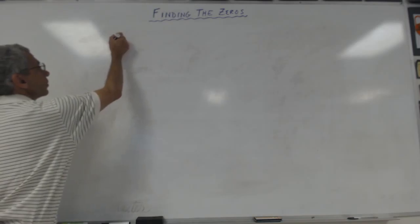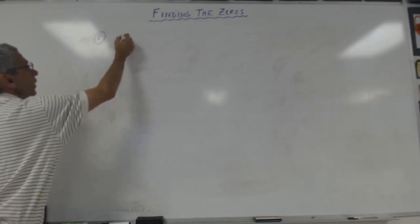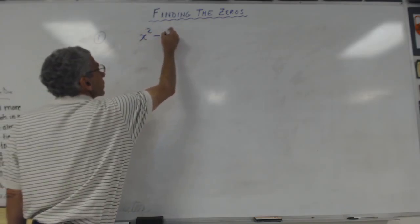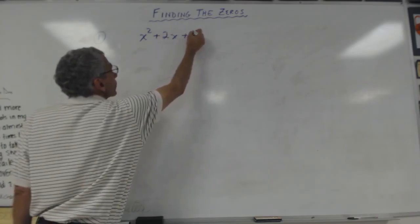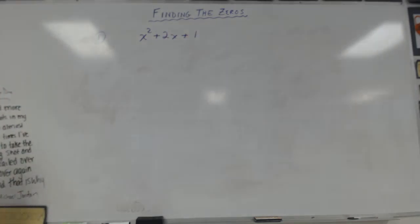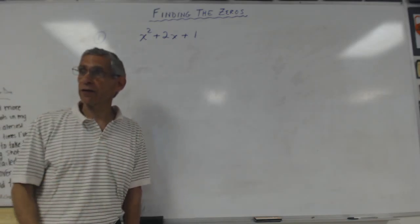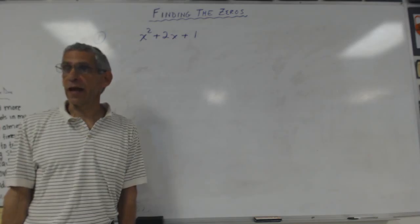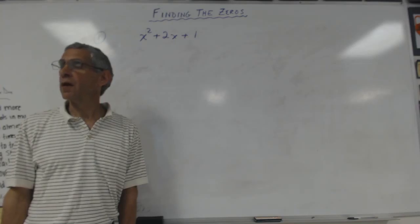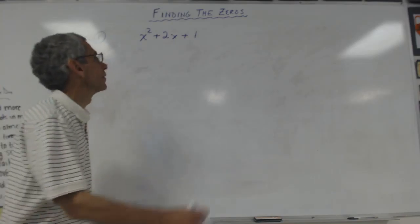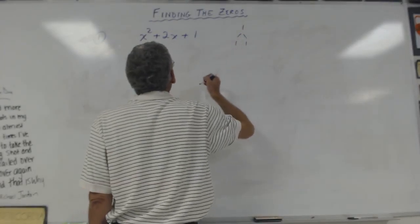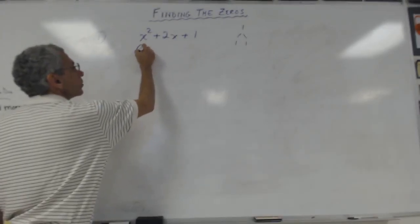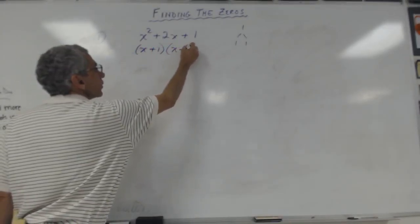Up to this point, I've given you things like this: x squared plus 2x plus 1. I can factor it. How would I factor it? Factors of C that add to B — 1 times 1 is 1, and 1 plus 1 is 2. So it would be x plus 1 times x plus 1.